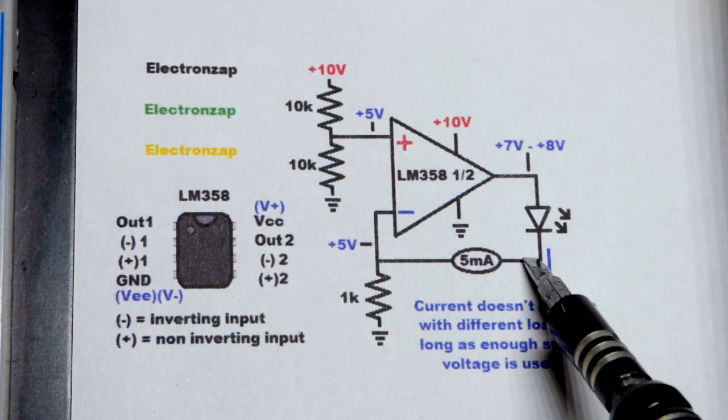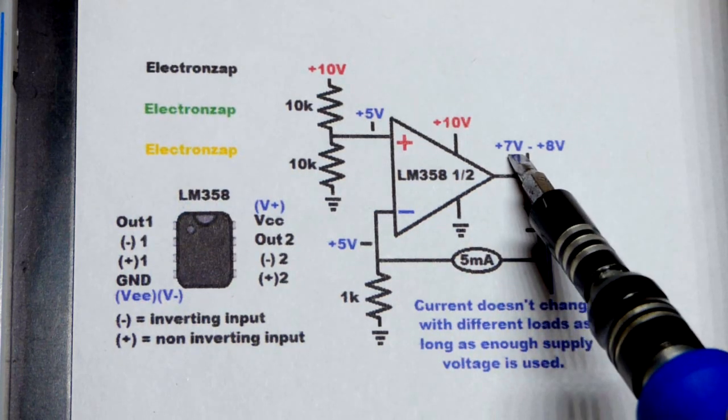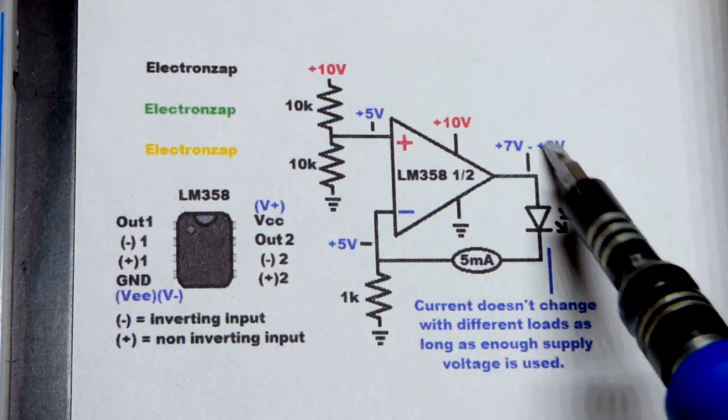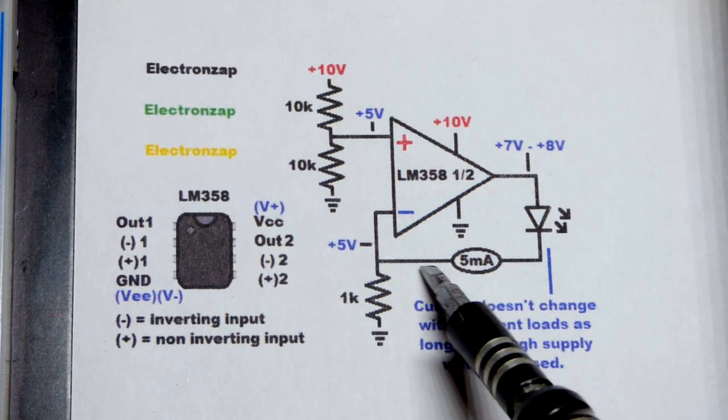So we got an LED. And so to get five volts here, the LED is going to drop about two or three volts. So the output will get up to about seven or eight volts, somewhere around there. Depends on color.